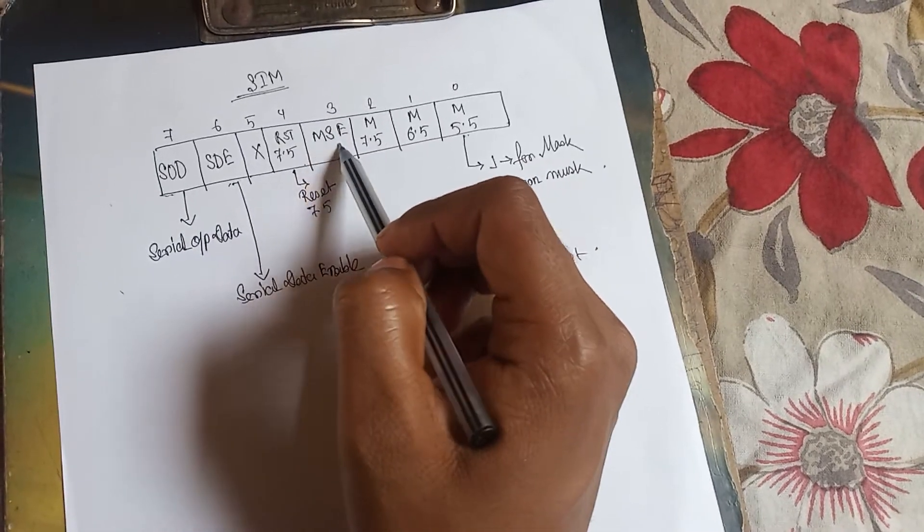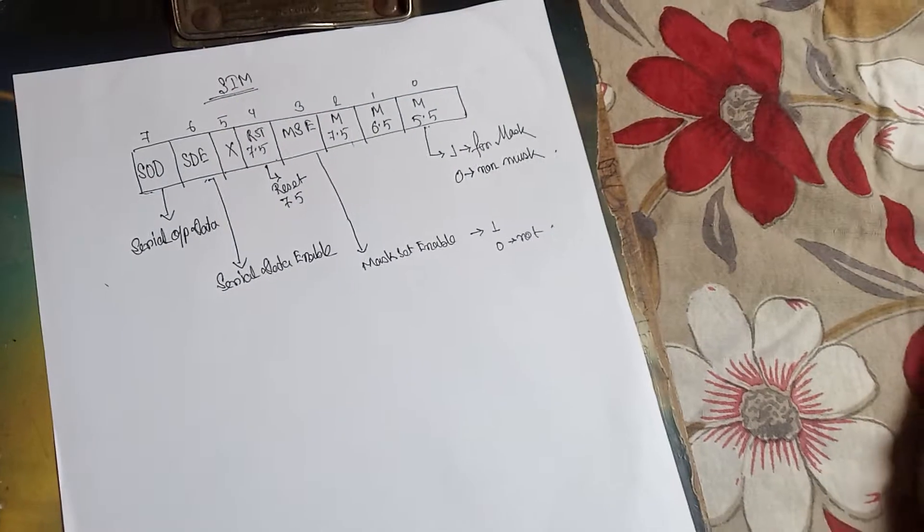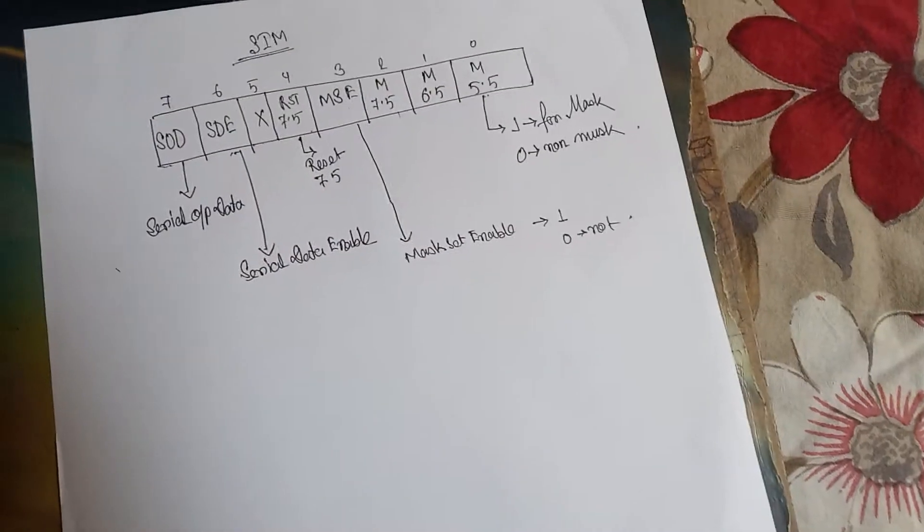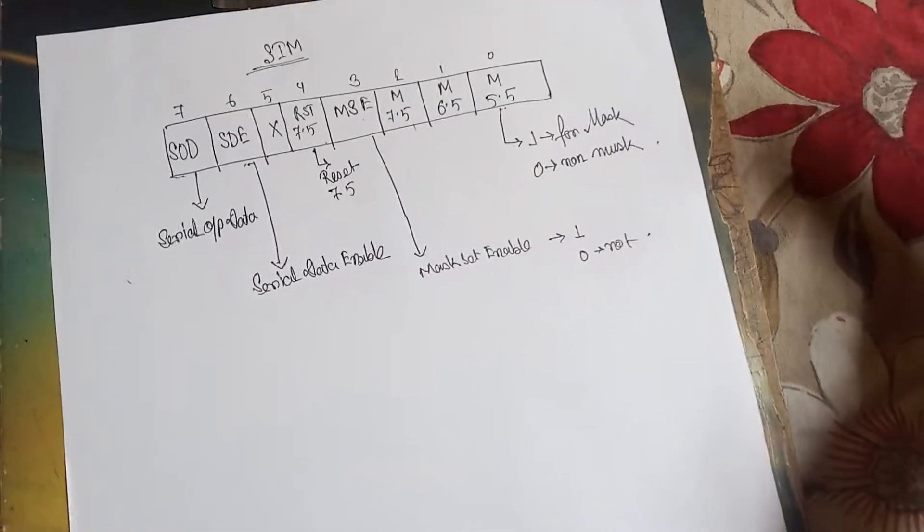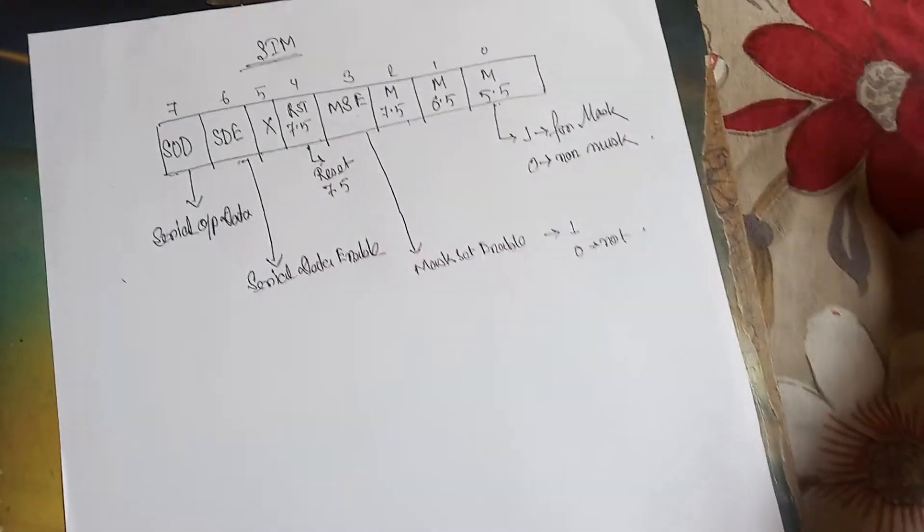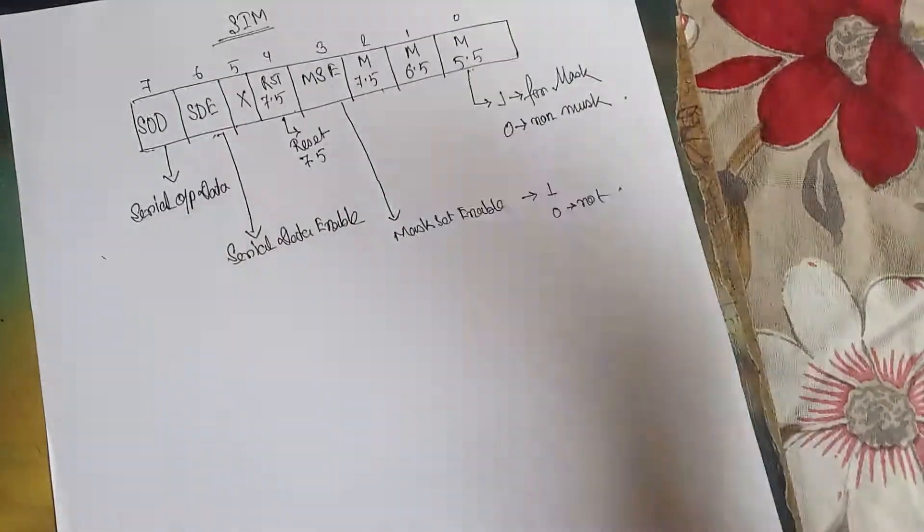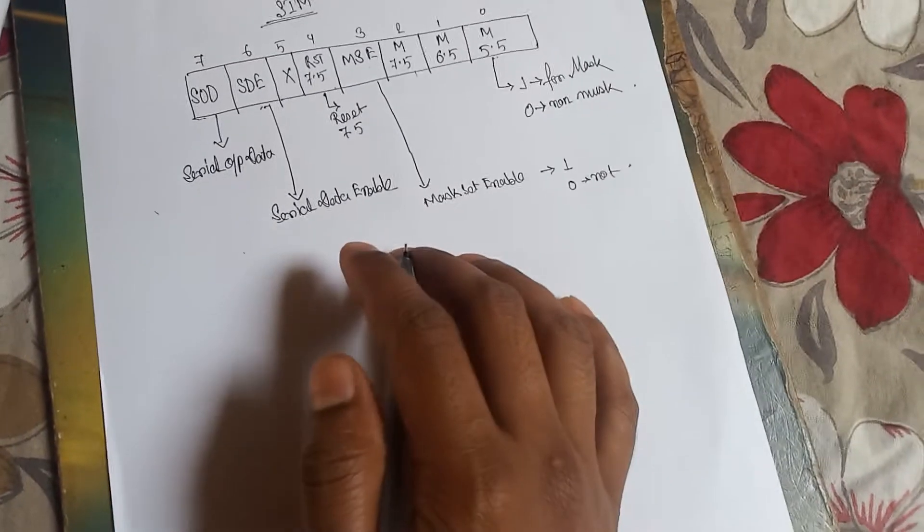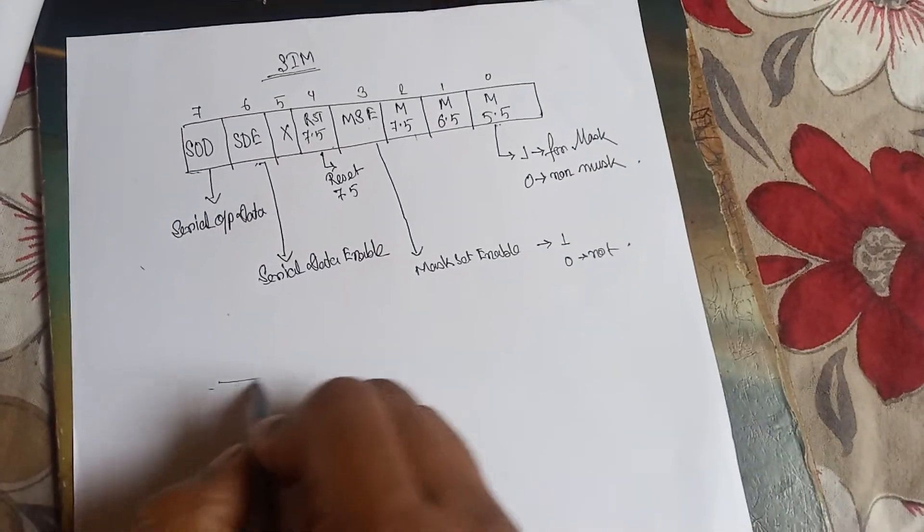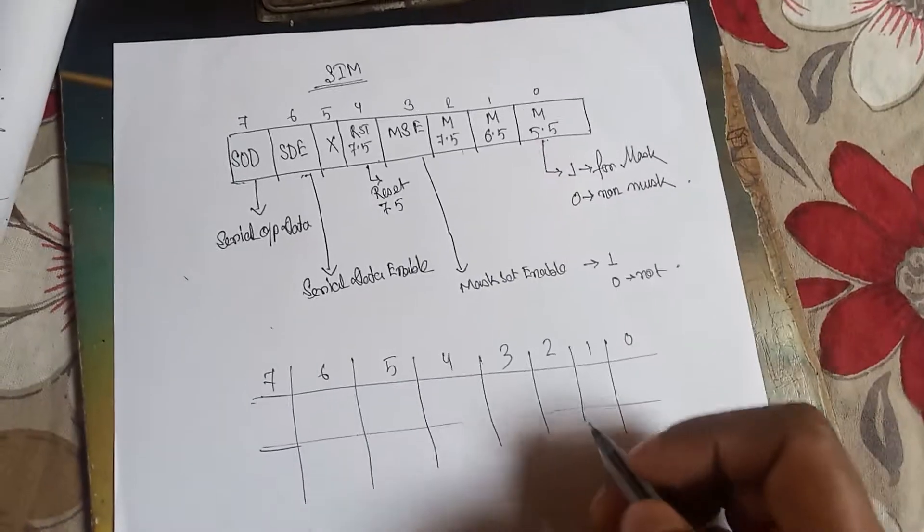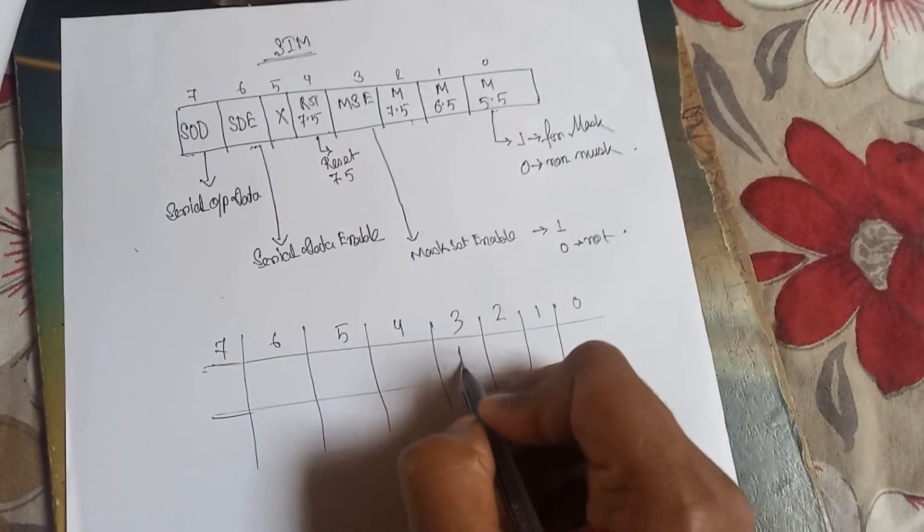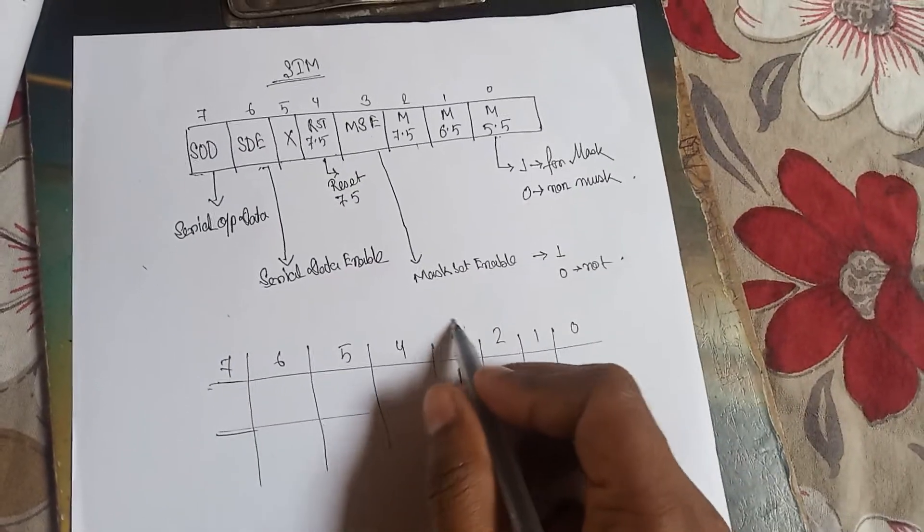So first of all, to do any interrupt mask, we have to set bit number 3 to one, that is the Mask Set Enable. And according to the query, according to the ALP, if one ALP is said that we have to mask RST 6.5 and RST 5.5 and don't mask RST 7.5, then like this.